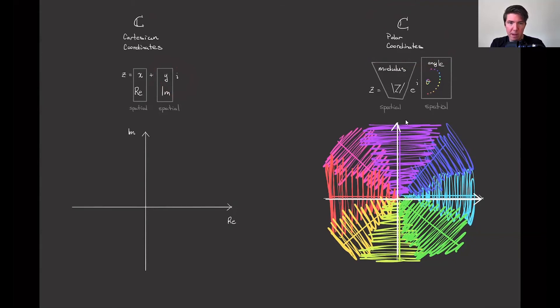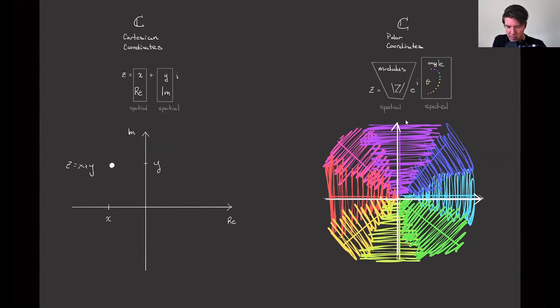We graph that in a plane, thinking of the horizontal axis as being the real axis and the vertical axis as being the imaginary axis. We can imagine there being an x value here and then a y value here. And when we match this up, just as if we would have plotted a point xy, here we have z is equal to x plus y times i.